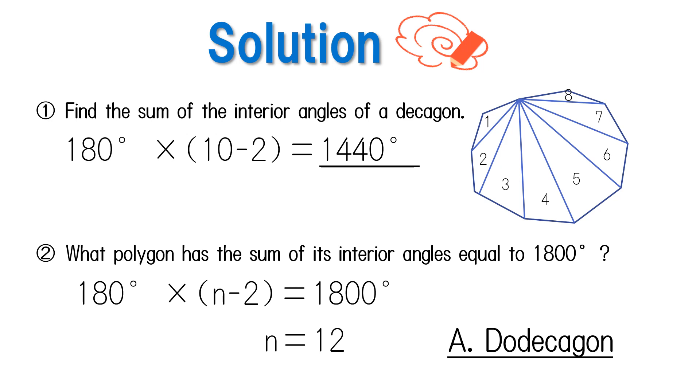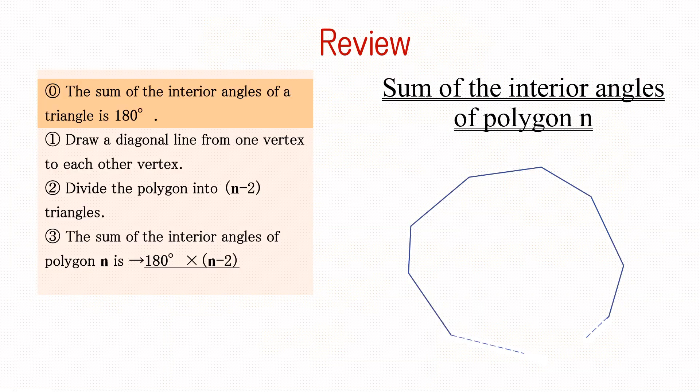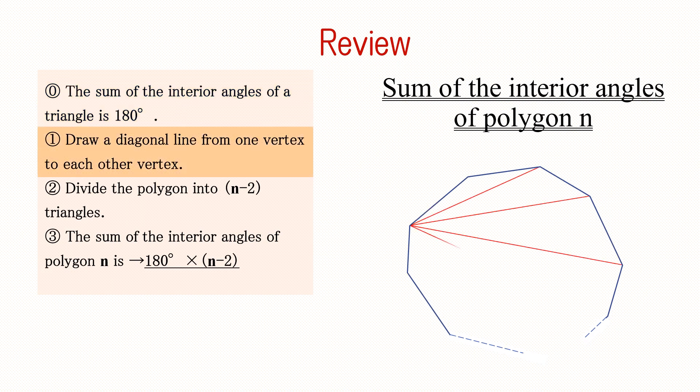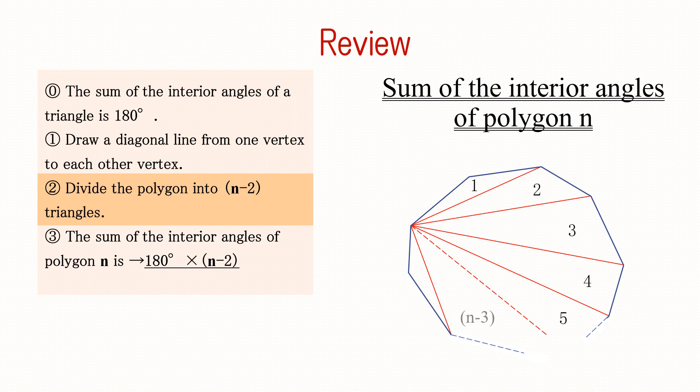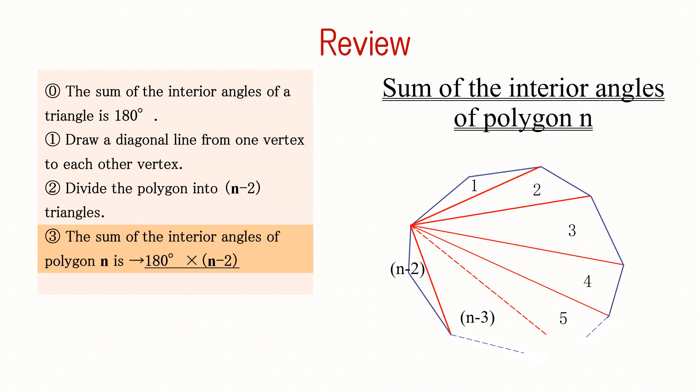Were you able to answer both problems correctly? Finally, let's review what we have learned. The sum of the interior angles of a triangle is 180 degrees. Using this fact, draw a diagonal line from one vertex to each other vertex to divide the polygon into (N minus two) triangles. Since the sum of the interior angles of a triangle is 180 degrees, the sum of the interior angles of polygon N is 180 times (N minus two).